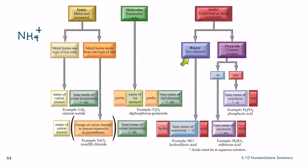There's the binary acids. Those are two elements, hydrogen and something else, and that's where you use the hydro prefix. The oxyacids contain oxygen. You look at the name of the oxyanion. If it's -ite, you change the ending to -ous. If it's -ate, you change the ending to -ic.